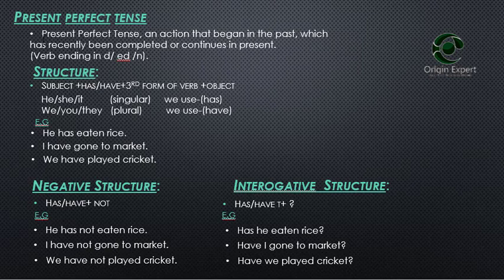What is the definition of present perfect tense? An action that begins in the past — it is the work that has started in the past which has recently been completed or is continuous in the present. The work that has started and today is completed or continuous.